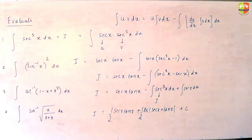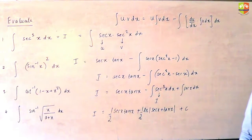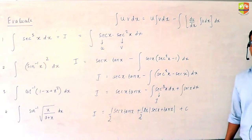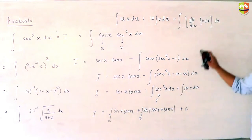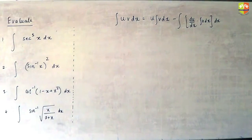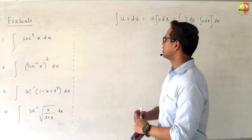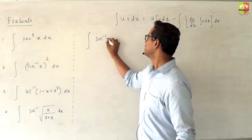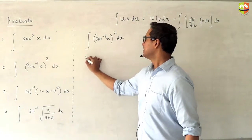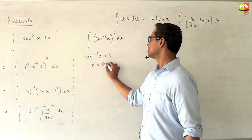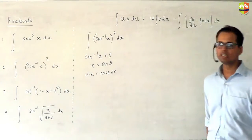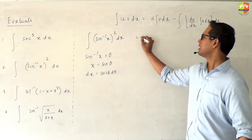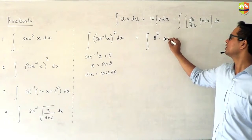Please be thorough with the basic formulas at least, because if you don't know the formula for integration of sec x and related functions, it will be a big problem. For the second one, take sin⁻¹x as θ. So x equals sin θ, and dx equals cos θ dθ. Now replace it back — you will get θ² and dx as cos θ dθ.